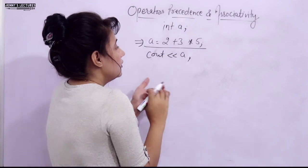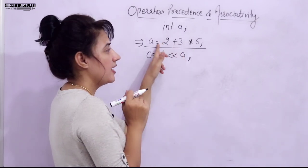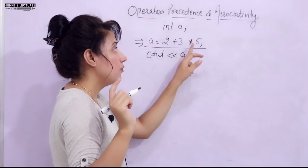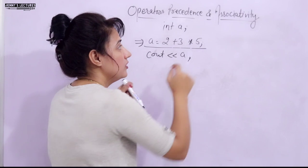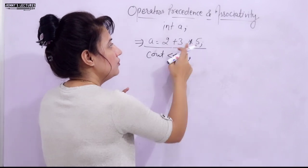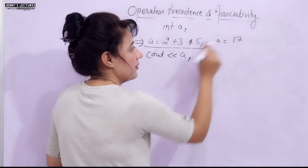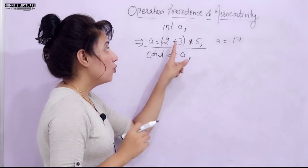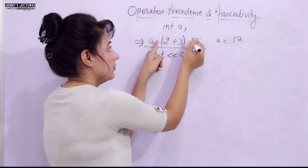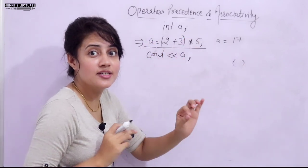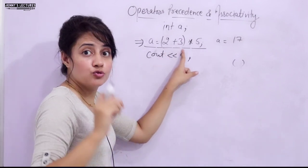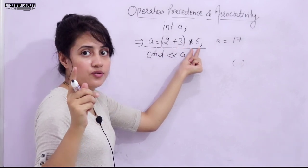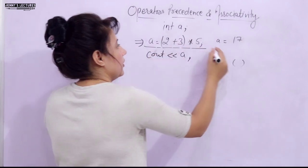Assignment operators have the lowest precedence, so they execute last. In the expression a = 2 + 3 * 5, multiplication has higher precedence than addition. So first 3 * 5 = 15, then 15 + 2 = 17, and finally a becomes 17. If we modify it to a = 2 * (3 + 5), the bracket has the highest precedence: 3 + 2 = 5, then 5 * 5 = 25, so a becomes 25. The two expressions give different results because of operator precedence.